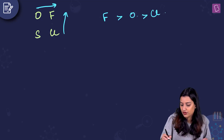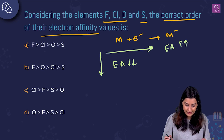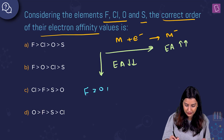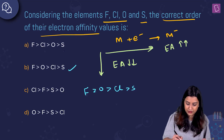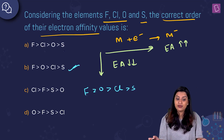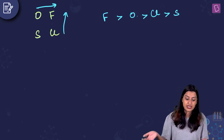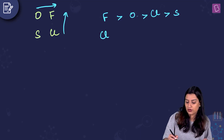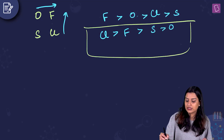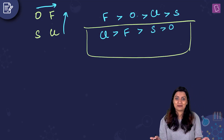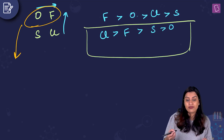However, the expected order based purely on periodic trends is not the observed order. The observed electron affinity order is actually Cl > F > S > O, and this is the answer seen in option C, not option A.